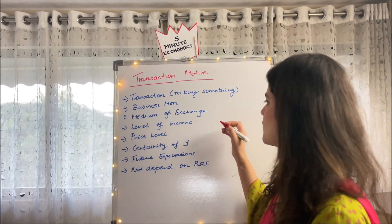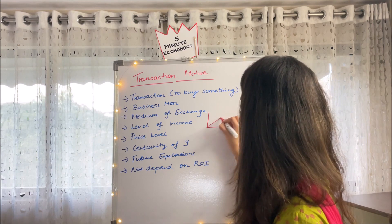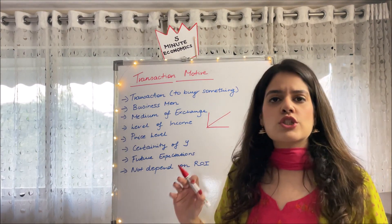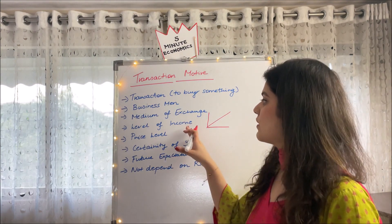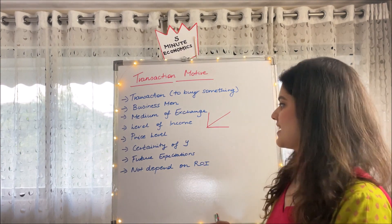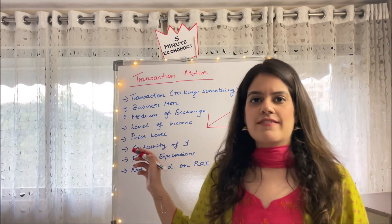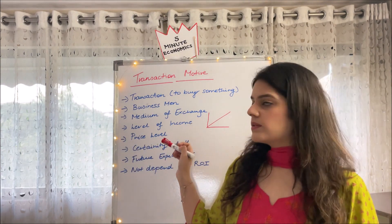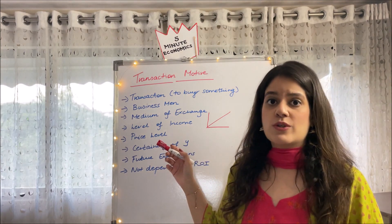If we draw a little curve out here, we can see a straight line curve which is showing a positive relationship between level of income and transactions.